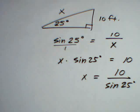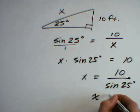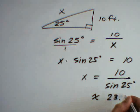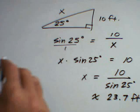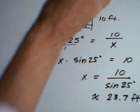Now, this you can put into the calculator, and you'll get approximately 23.7 feet. So, our missing side is about 23.7 feet.